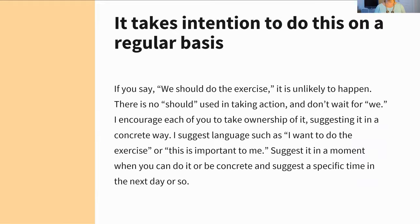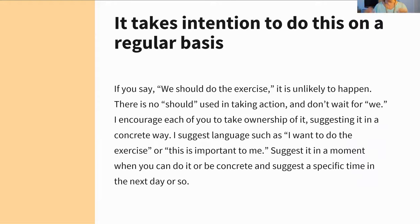It's going to take intention to do this on a regular basis, because just like you may have been avoiding sex, you may avoid this. If you leave this module and say 'oh yeah, we should do that exercise' — that won't happen. That's like saying 'we should eat better' or 'we should save for retirement.' You need concrete, specific ownership of this from each of you. I really suggest you each take full responsibility for making it happen. Talk in very concrete ways: 'Can we do this tonight after dinner? Can we put this on the calendar for Friday right after work? Can we do it every other day? Go to bed 20 minutes early?' Be concrete and really take ownership.